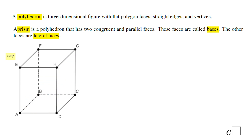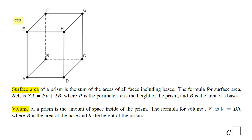That is about this polyhedron called a prism. What I want to cover in this lesson is also the surface area, which means the sum of the area of the bases — the two bases — plus four rectangles: left, right, back, and front. There is a formula which can be used where P is the perimeter, H is the height of the prism, and B is the area of the base.